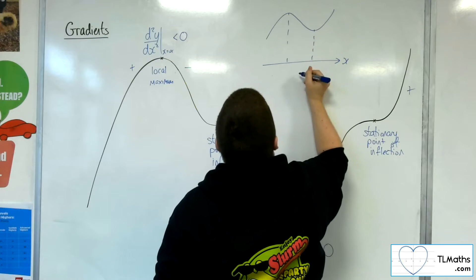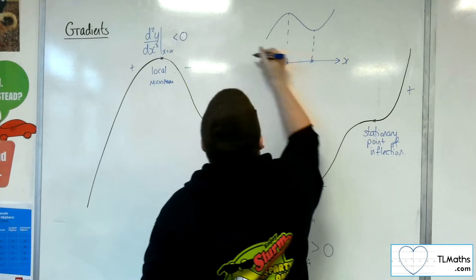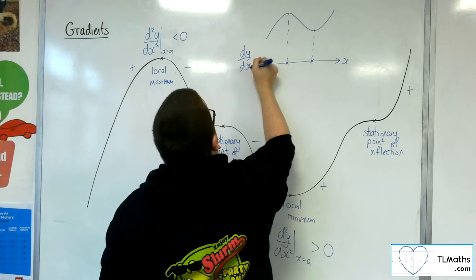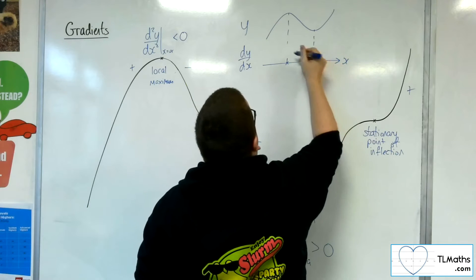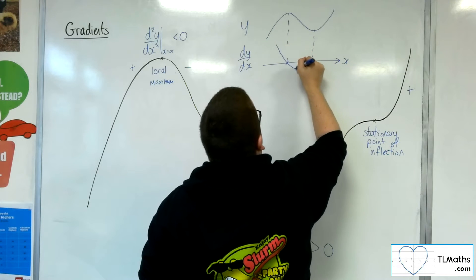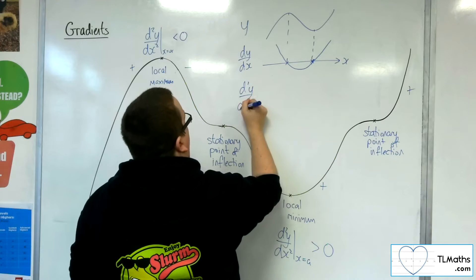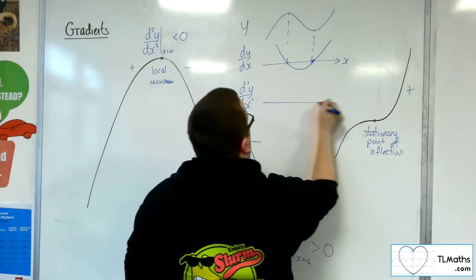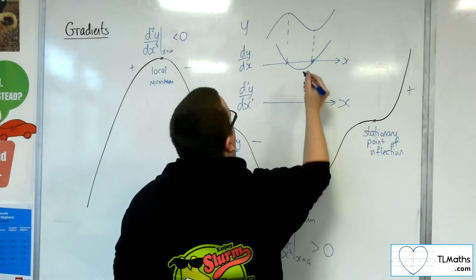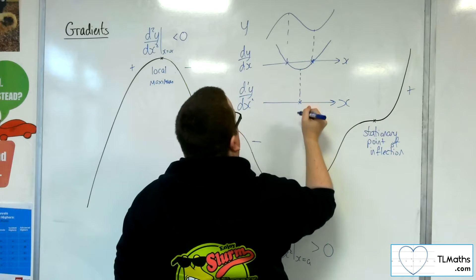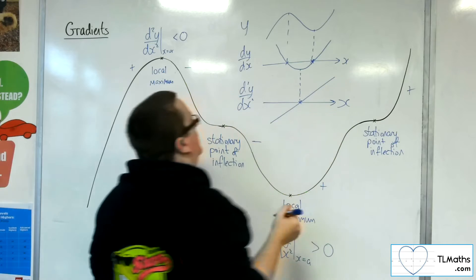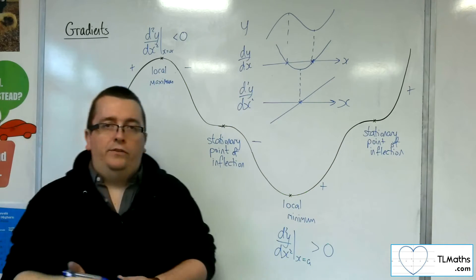And if you look at the stationary points, was where the first derivative crosses the x-axis, and we're going from a positive gradient to negative to positive. And then we had the second derivative, and that stationary point there was where this one crosses. And we have this diagram here.